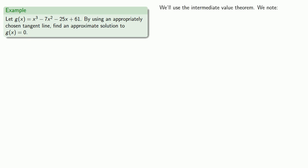Let's use the intermediate value theorem. We know that g(0) = 61, and g of, oh, I don't know, how about 5 is equal to -114.